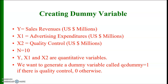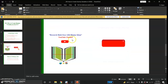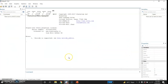So all three variables are quantitative in nature, but I want to generate a dummy variable which will be called quality control dummy, that will be equal to 1 if there is quality control and 0 otherwise. So let me go to my Stata file and open it.